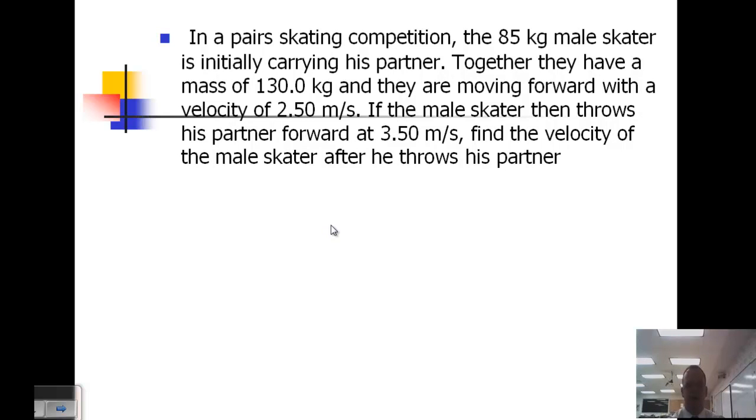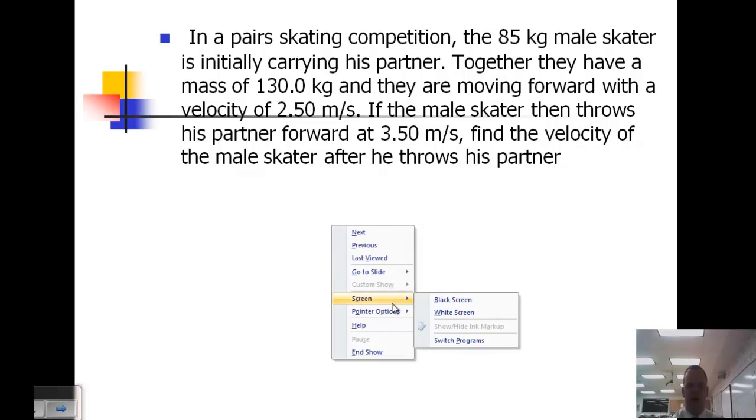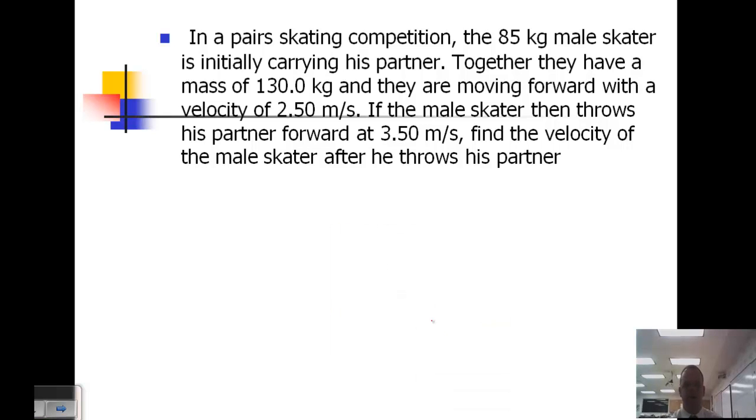In this problem, we have the two skaters together, and they're going to separate into two individual objects. So this is basically the reverse of an inelastic collision. We have the two objects together. So the mass is added together times the initial velocity equals the mass of object 1 times the final velocity plus mass of object 2 times the final velocity. This is just the reverse of an inelastic collision problem.